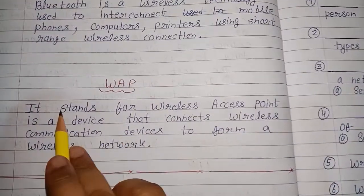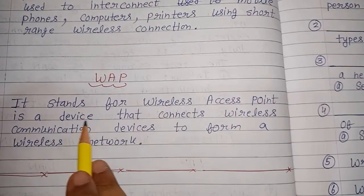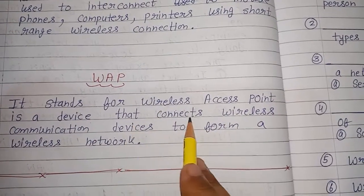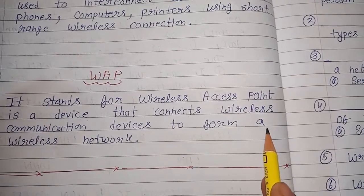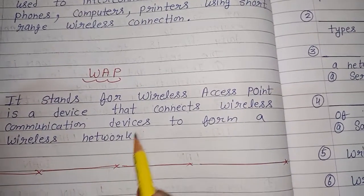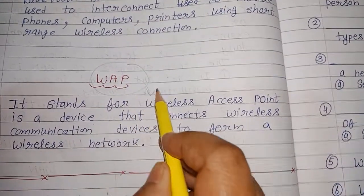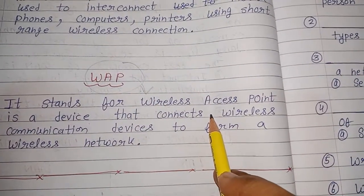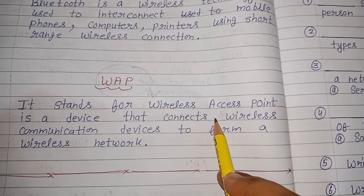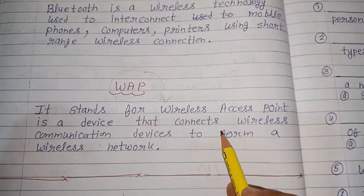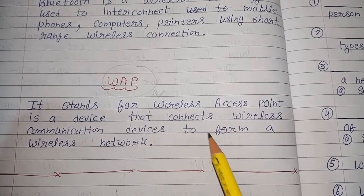WAP — it stands for Wireless Access Point. It is a device that connects wireless communication devices to form a wireless network. मतलब यह एक device है जिसके through आप wireless technology को एक computer से दूसरे computer में connect करते हैं. We will discuss our next topic in our next class. Thank you.